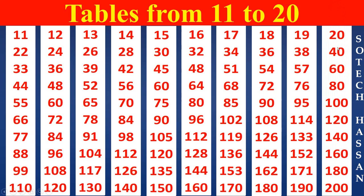20th table. 20 ones are 20. 20 twos are 40. 20 threes are 60. 20 fours are 80. 20 fives are 100. 20 sixes are 120. 20 sevens are 140. 20 eights are 160. 20 nines are 180. 20 tens are 200.